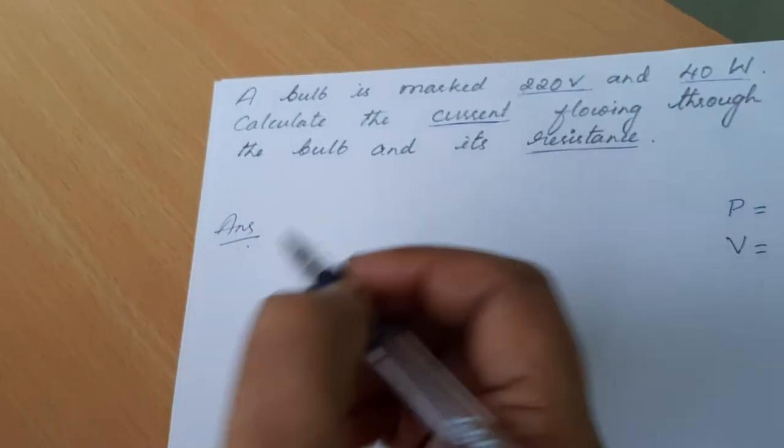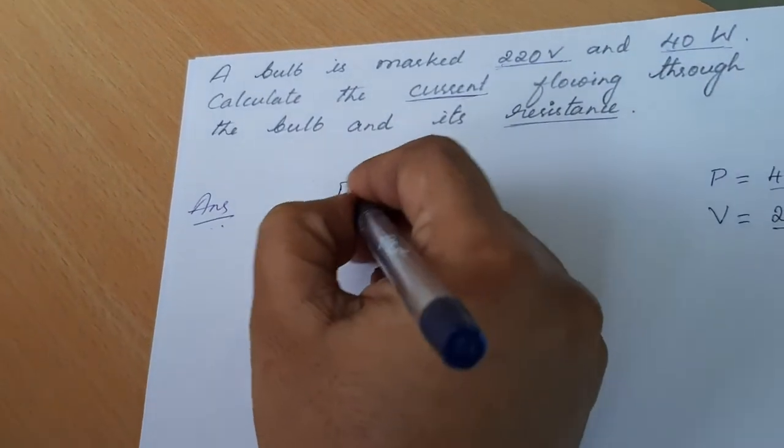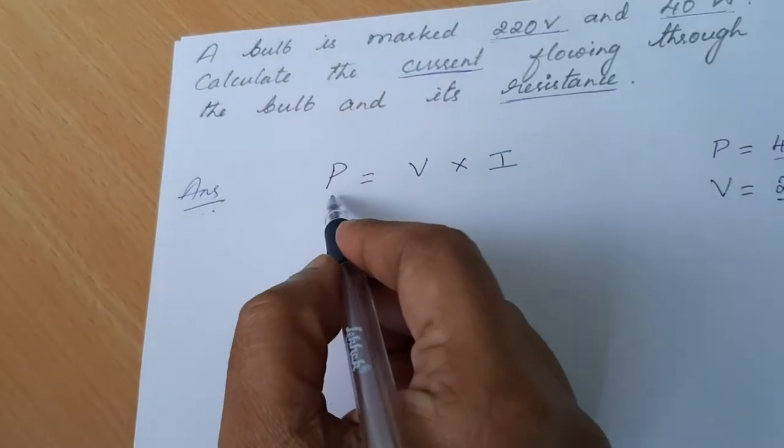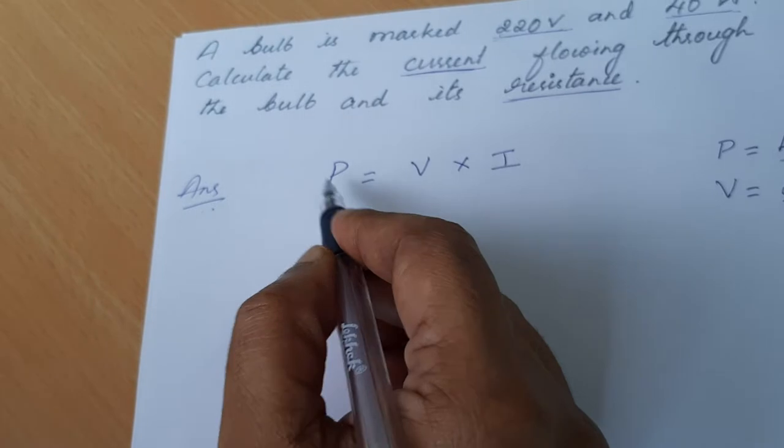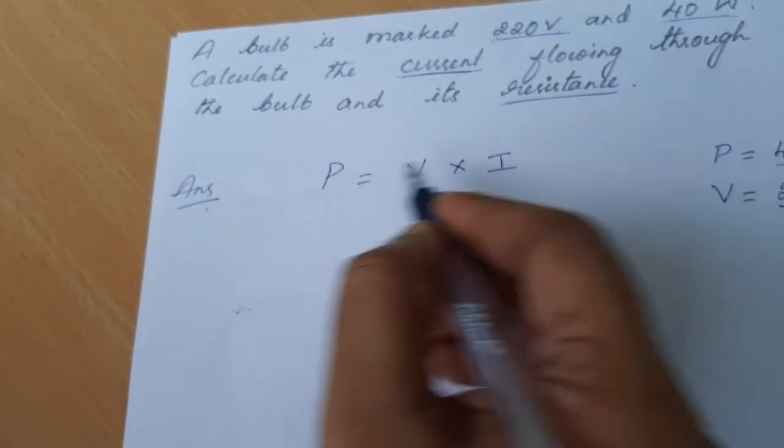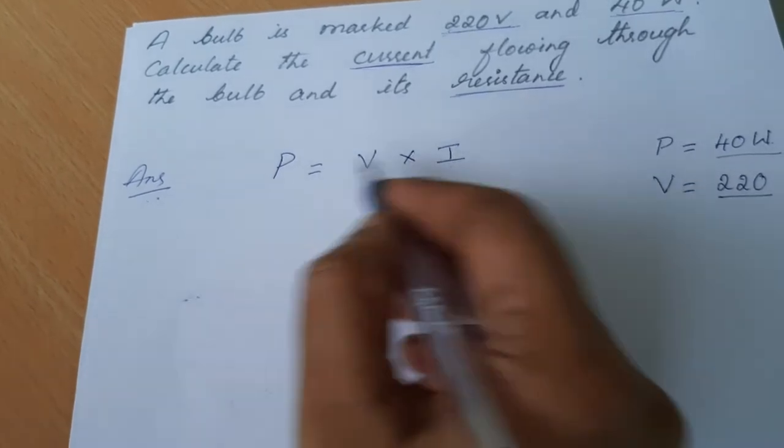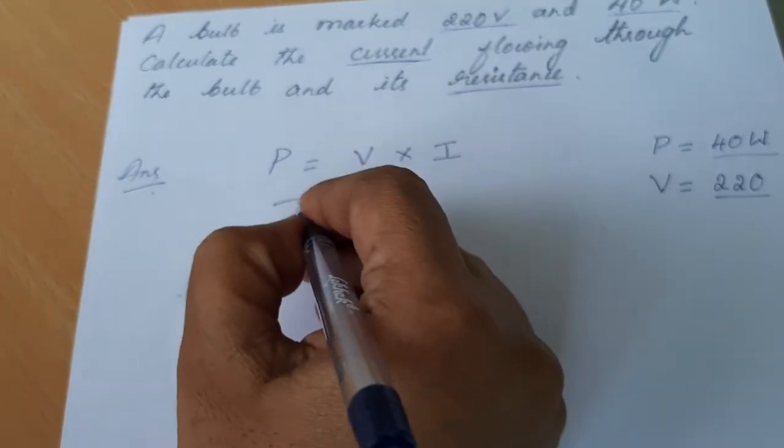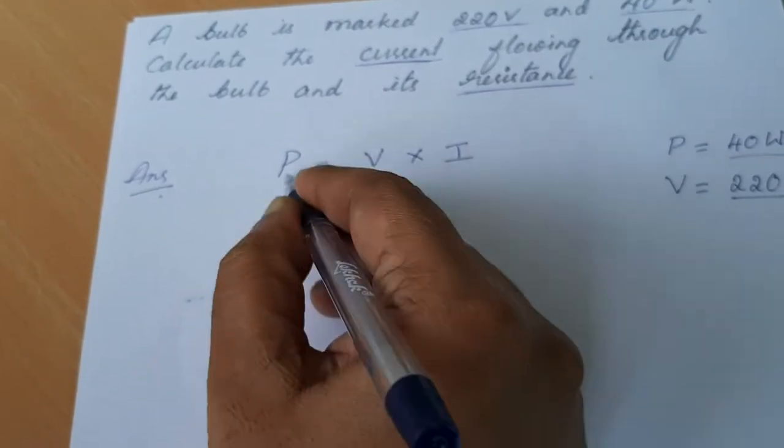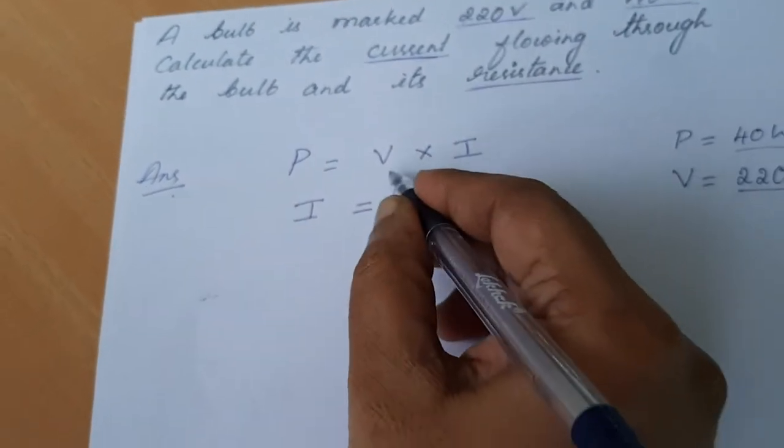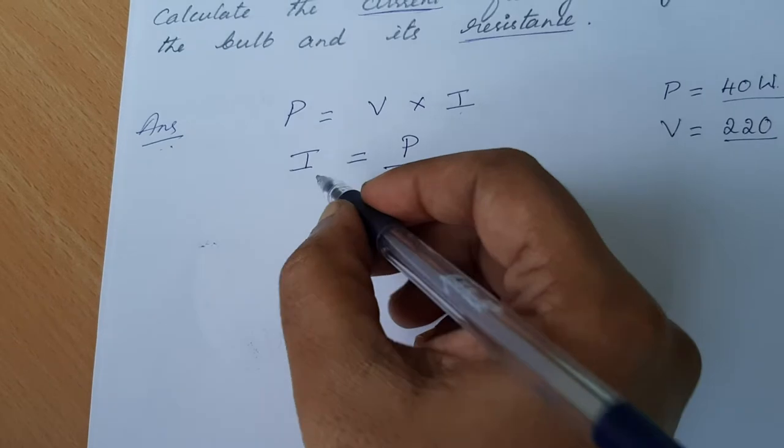To calculate current, let us write down the formula P equals V times I. This is the formula to calculate power. We are not calculating power but we have to calculate the current. So let us rearrange the formula: I equals P by V. So this is the formula.